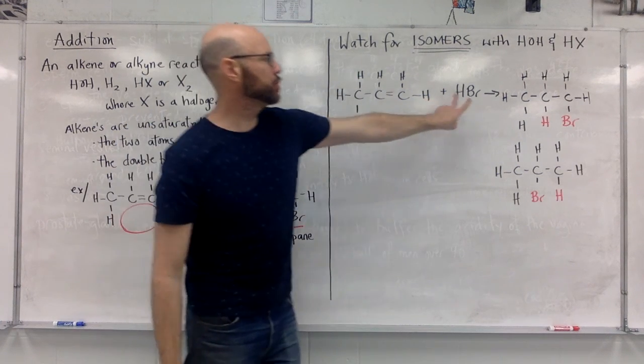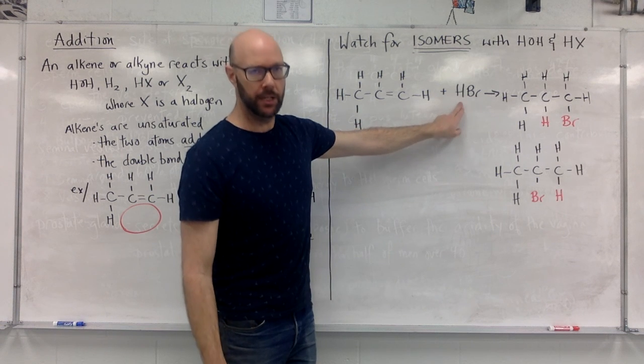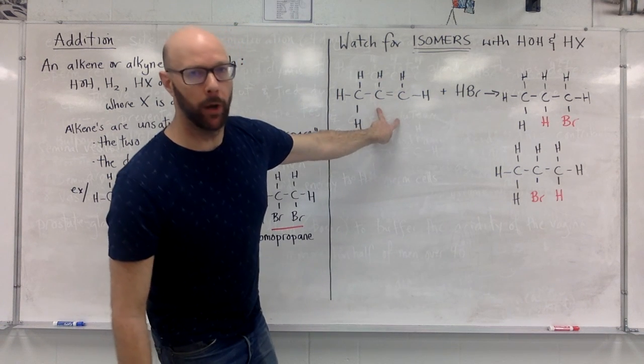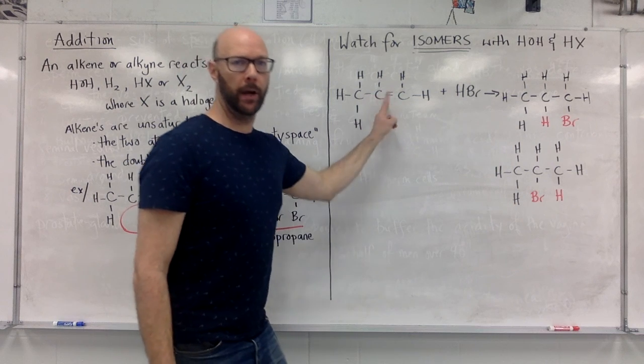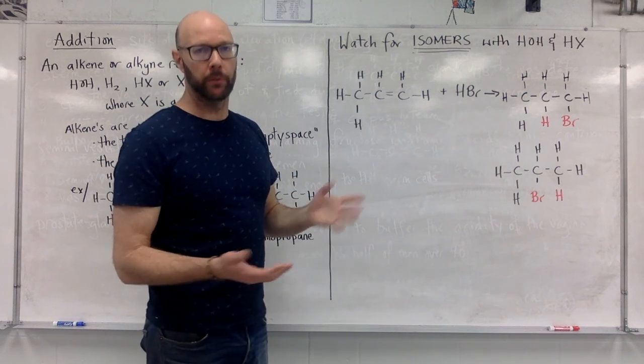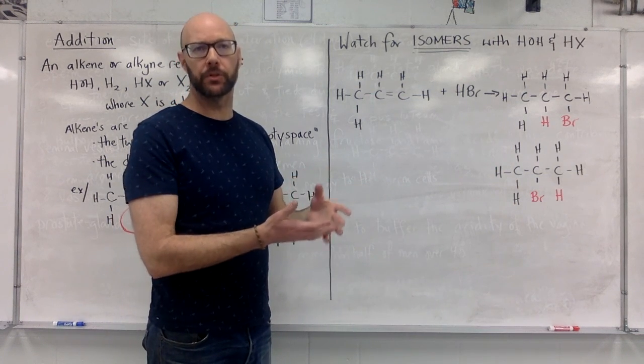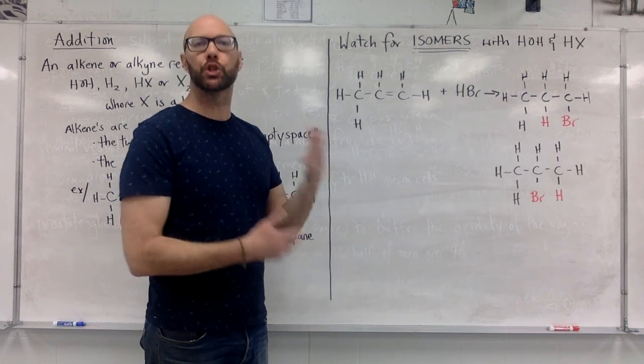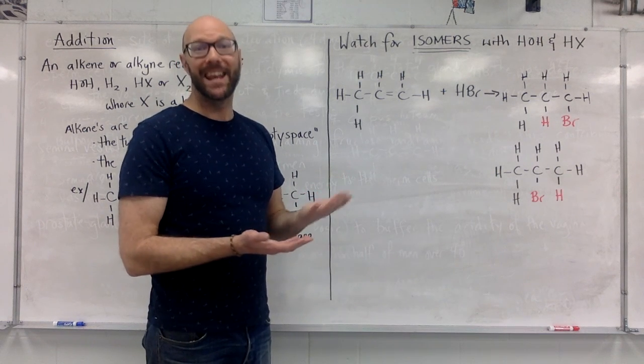But because there's two different atoms there, H and Br, they can go in one way or the other way. And in fact, we get both. So we end up with two isomers both being produced, and we would need to show them both and even name them both.